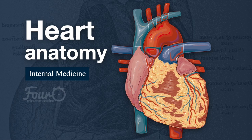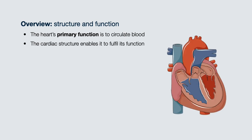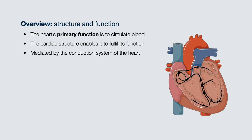In this video, we will review the gross anatomy of the heart. The heart's primary function is to circulate blood around the body, and the cardiac structure enables it to fulfill this function. This whole process of coordinated cardiac contraction is mediated by the conduction system of the heart.